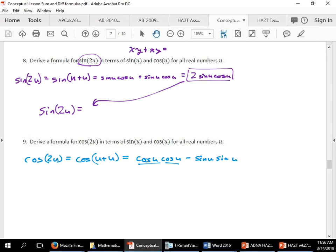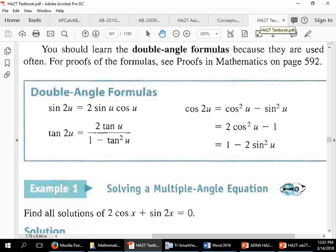And what is cosine times cosine? Cosine squared u minus sine squared u. Hey, yo. You guys remember that formula? It's right here. It's right here in your textbook.